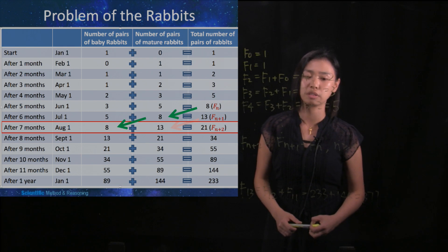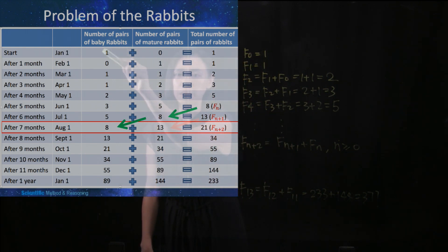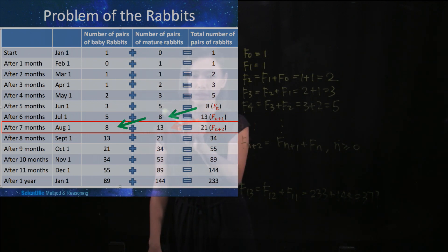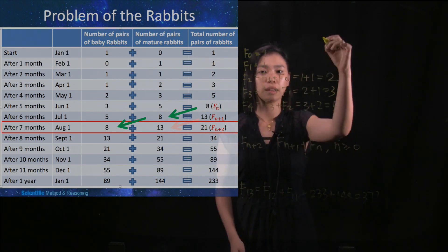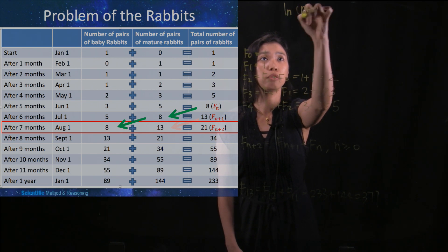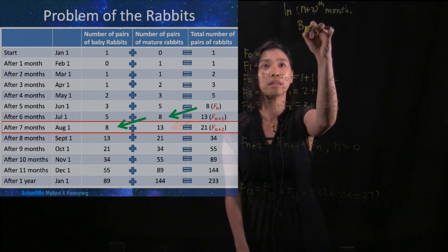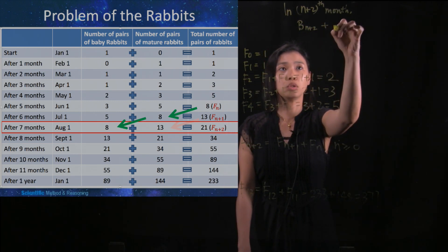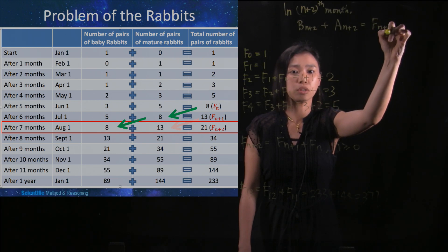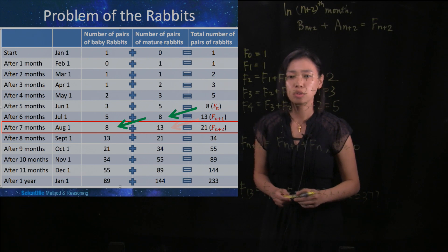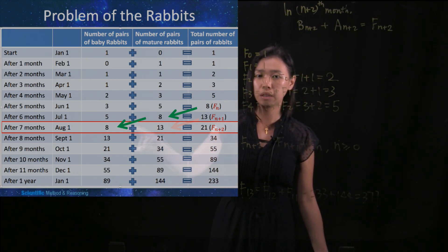It does not sound very obvious, right? So why is it like this? We may need to go back to the original table. One may notice that the number of pairs of baby rabbits, when added to the number of pairs of mature rabbits, gives the total number of pairs of rabbits. So in the n plus 2 months, the total number of babies plus the total number of adult rabbits in that month would be F(n+2). You notice that 8 plus 13 is just 21 — the total is babies plus mature.